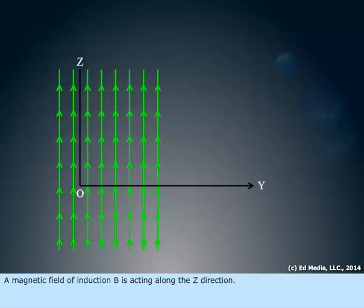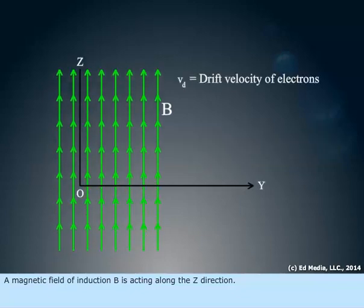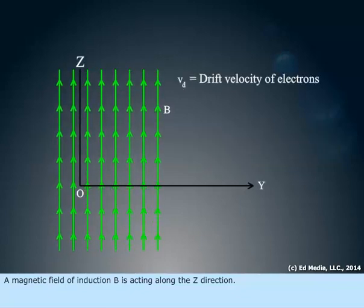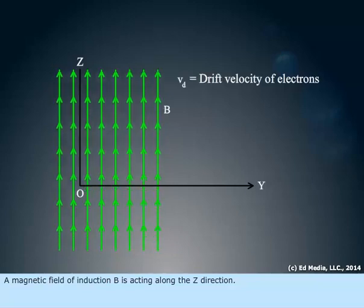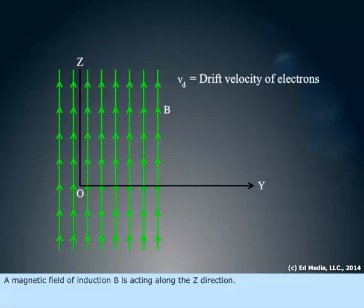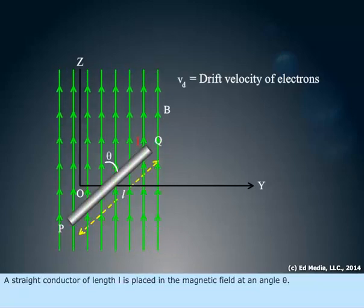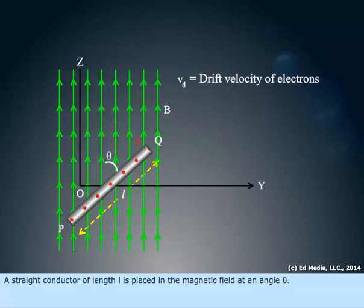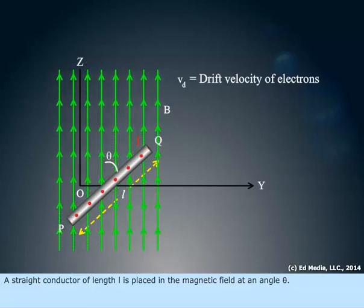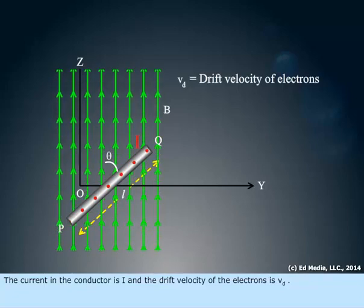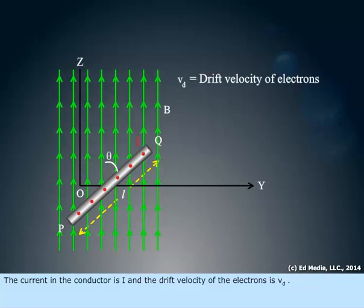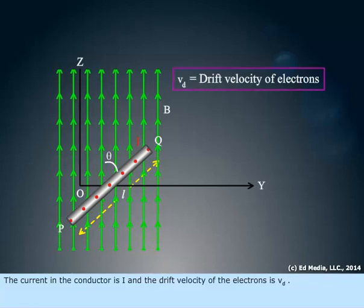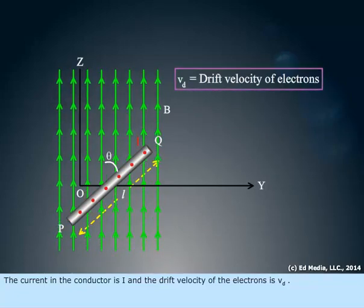A magnetic field of induction B is acting along the z direction. A straight conductor of length L is placed in the magnetic field at an angle theta. The current in the conductor is I and the drift velocity of the electrons is Vd.